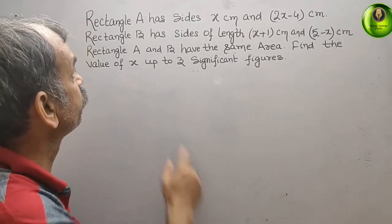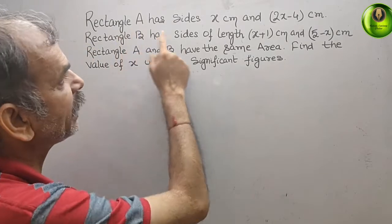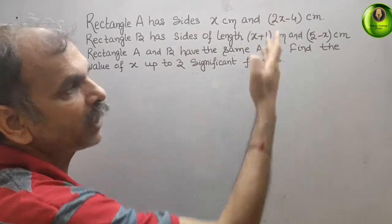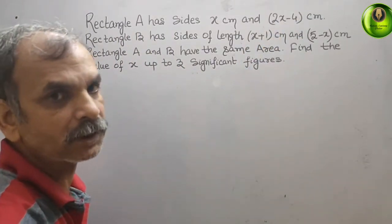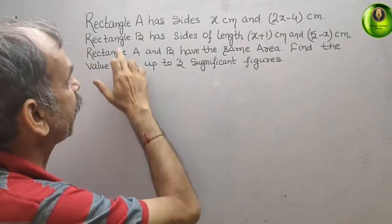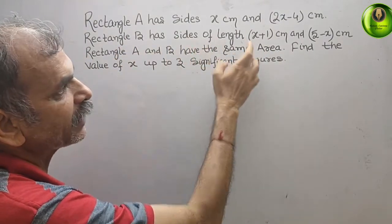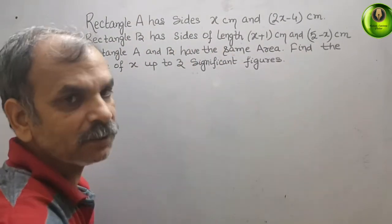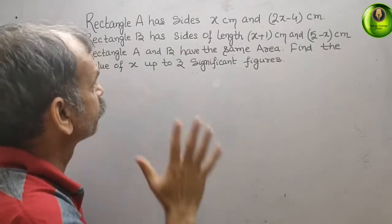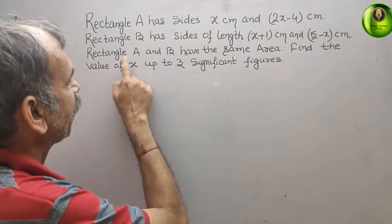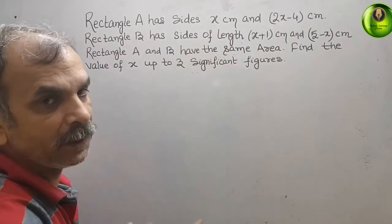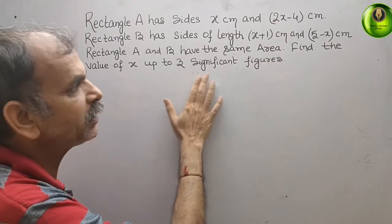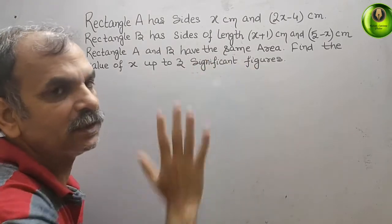Your question is: Rectangle A has sides x cm and 2x minus 4 cm. Rectangle B has sides of length x plus 1 cm and 5 minus x cm. Rectangle A and B have the same area. Find the value of x up to 3 significant figures.